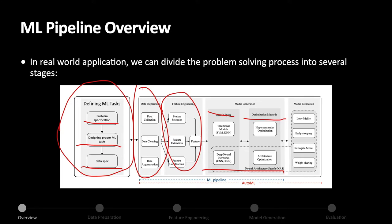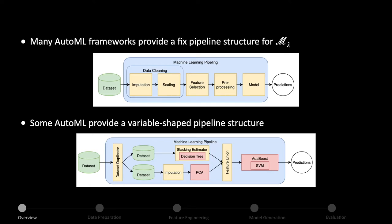AutoML covers all stages after defining the ML task and data specification. Many AutoML frameworks provide a fixed pipeline structure. The advantages of fixed pipelines are easy implementation, less search complexity, less overfitting, simplified algorithm selection, and cost efficiency. Some AutoML frameworks provide a variable-shaped pipeline structure. The advantages of variable-shaped pipelines are that they can create any arbitrary combination of pipelines and could theoretically achieve better performance given enough data and computational resources.